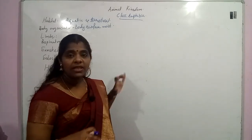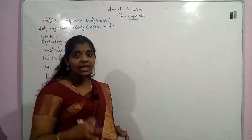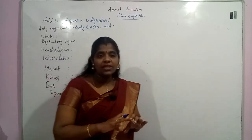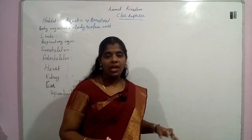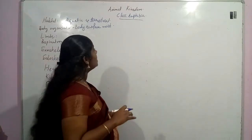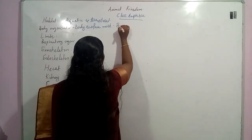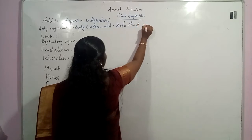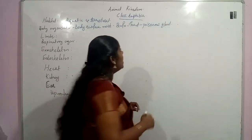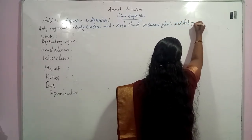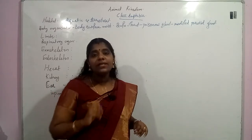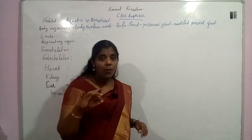Some amphibians have a smooth, moist body surface with no exoskeleton. They may show poisonous glands — that is the modified parotid gland present in Bufo. Some amphibians can change color by elaborating certain cells present on the surface of the skin. Those skin cells are called chromatophore-containing cells.